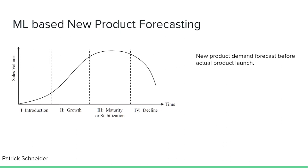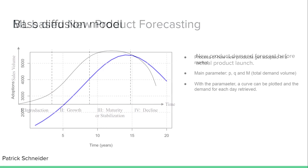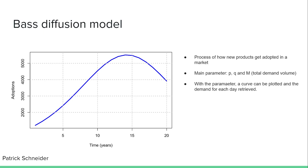This unique approach combines the principles of machine learning and economical product market diffusion. At first, let me explain the economic model that we will use as a base for our machine learning approach. The base model, or base diffusion model, consists of a simple differential equation that describes the process of how new products get adopted in a population. The base model has been widely used in forecasting, especially new product sales forecasting.